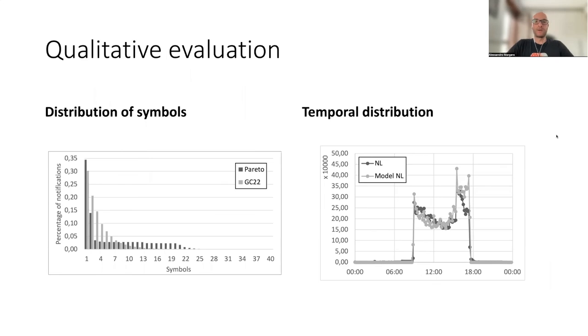Finally, as I mentioned we currently only have an initial qualitative evaluation based on the grand challenge public dataset. We report here one result on the left that appears to be similar but slightly different in the grand challenge dataset which is the distribution of symbols which is even more skewed in the grand challenge dataset than what we can derive and what we use in our model. Instead on the right the daily pattern of event notifications is followed with a good approximation by all the exchanges in the grand challenge dataset. Here on the right you can see the Amsterdam NL exchange but similar patterns are visible for all other exchanges.